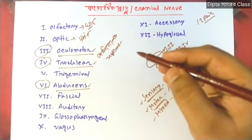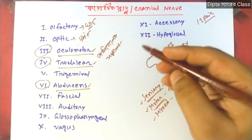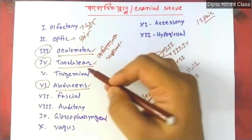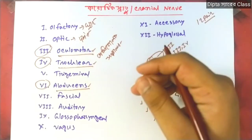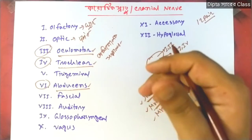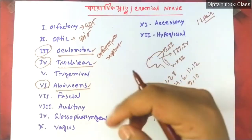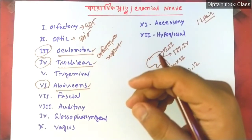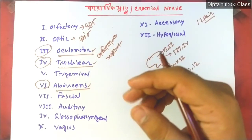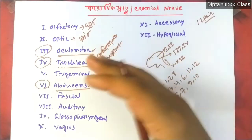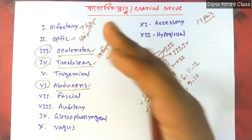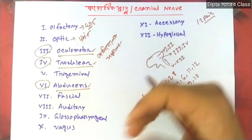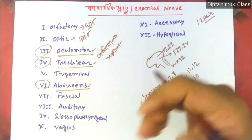So cranial nerves 3, 4, and 6 all share the same function — controlling eyeball movement. Using this main function, we can identify each one. The next nerve in the series is the Trigeminal.